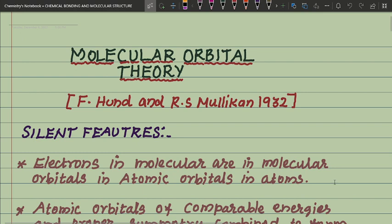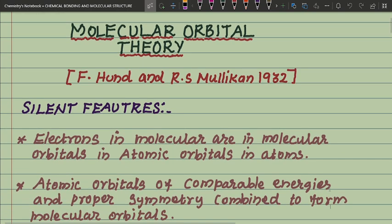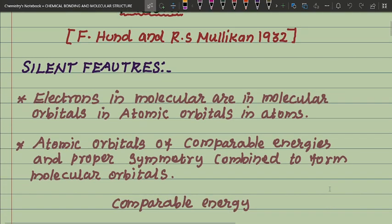Welcome to Chemistry Plumbum. Today we will see Molecular Orbital Theory. It was discovered by Hund and Mulliken in 1932. The salient features: electrons in molecules are in molecular orbitals, while electrons in atoms are in atomic orbitals.